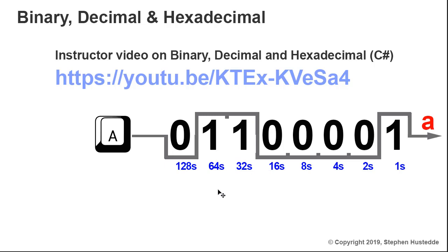If we want to go the other way, we can take 97 and ask: how many 128s are in 97? Well, zero. How many 64s? We can get 1, leaving a remainder of 33. So we can get a 32 out of that 33; after that we have 1 left over. So no 16, no 8, no 4, no 2, but there's a 1. That's how we convert the other way. I'll come back and look at hexadecimal a little later in the video.